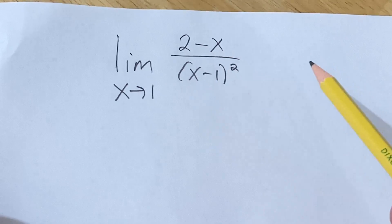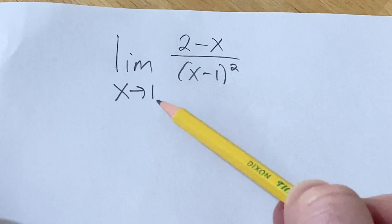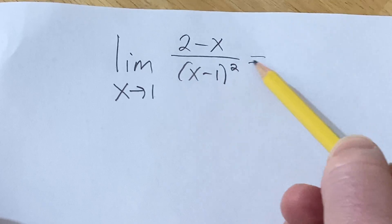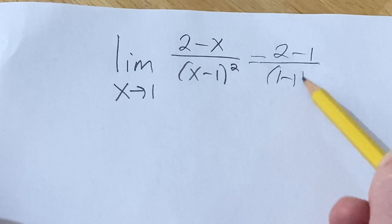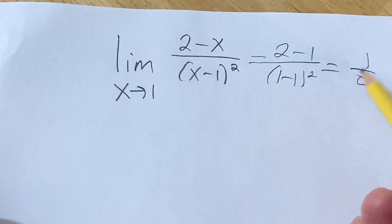So always when finding limits, the first thing you should do is just plug in the number to see what happens. If you do that in this case, you get 2 minus 1 over 1 minus 1 squared. So you get 1 over 0, game over.